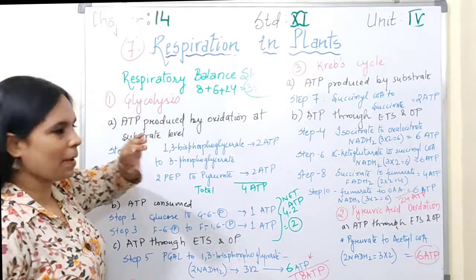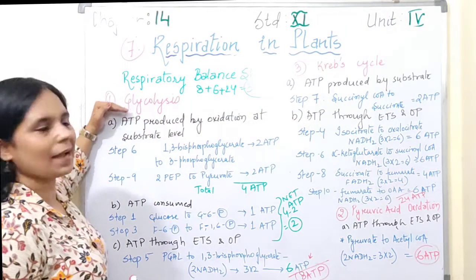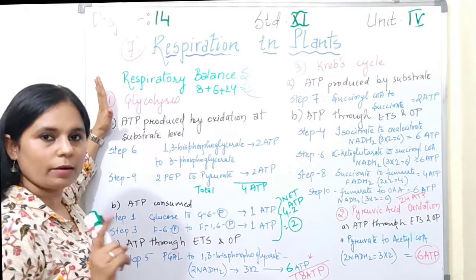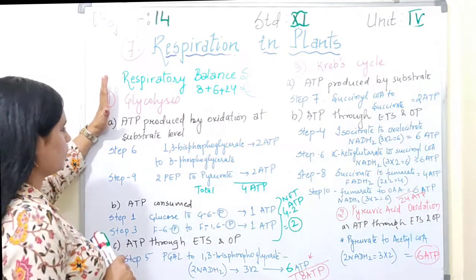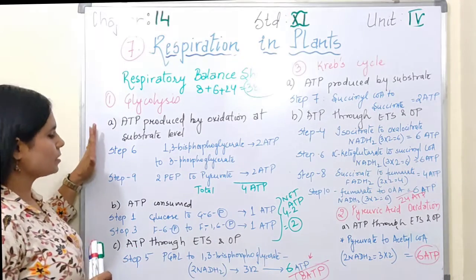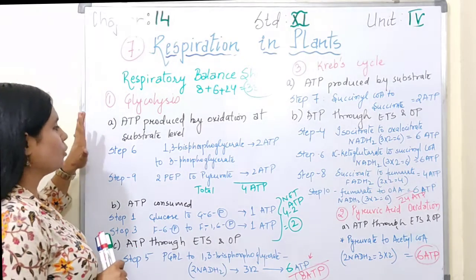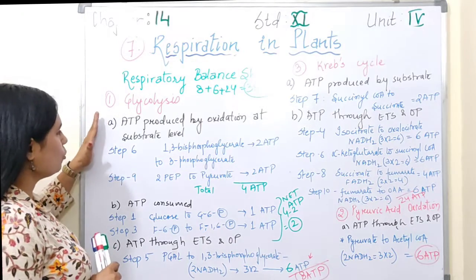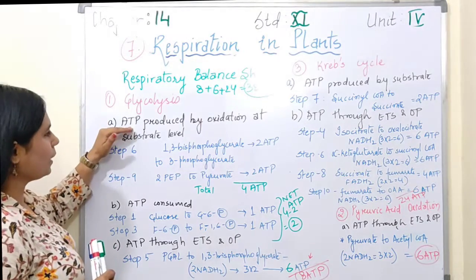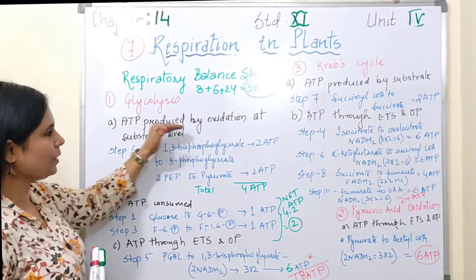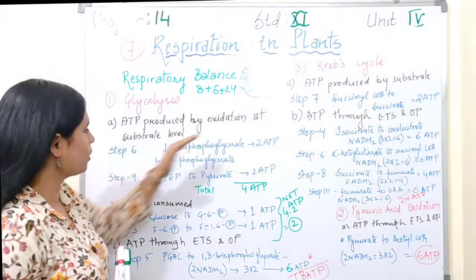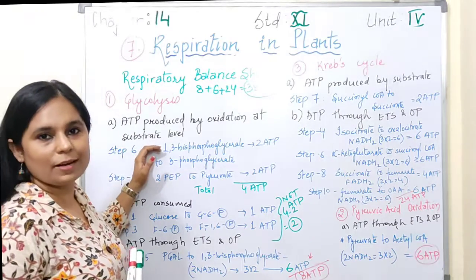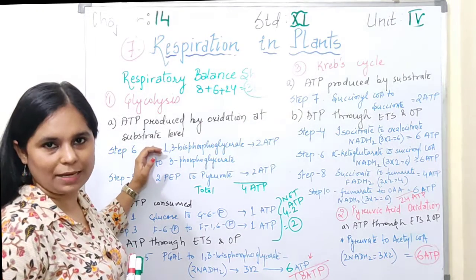First of all, we talk about glycolysis. In glycolysis, ATP is produced by oxidation and substrate-level phosphorylation.